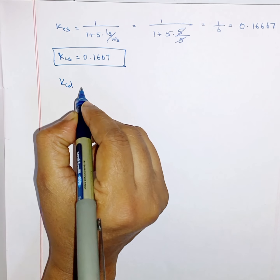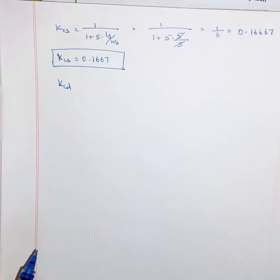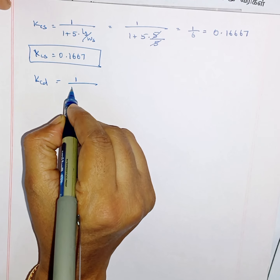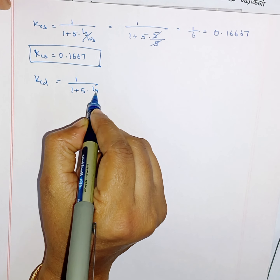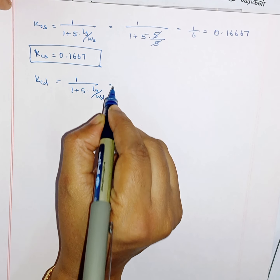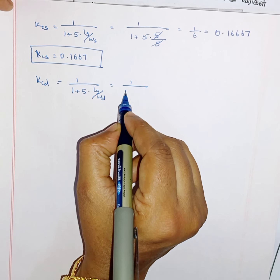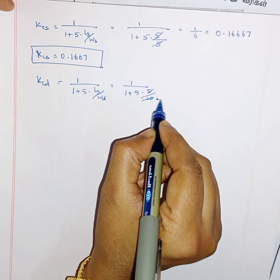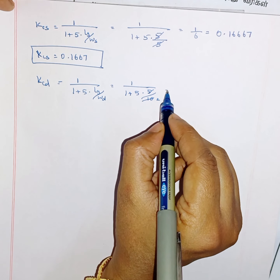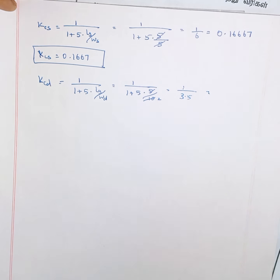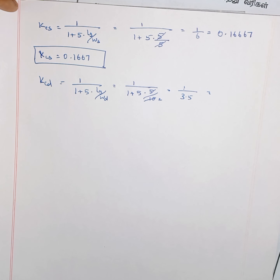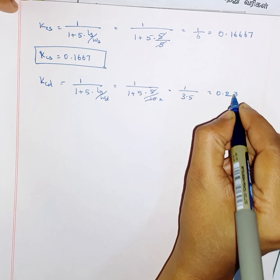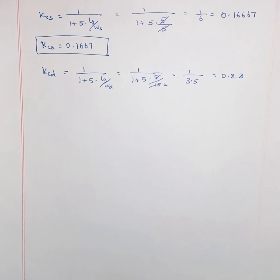Similarly KCD uses the same formula: 1 divided by (1 plus 5 times LG divided by width of the duct). Width of the duct is 10 mm, so 1 divided by (1 plus 5 times 5 divided by 10) equals 1 divided by (1 plus 2.5) equals 1 divided by 3.5, giving KCD equal to 0.28.